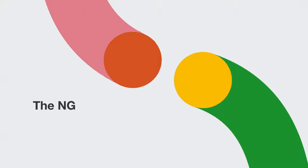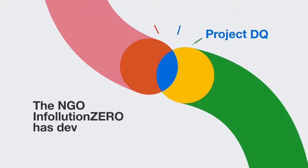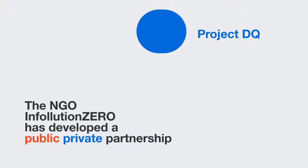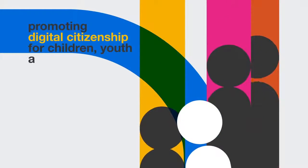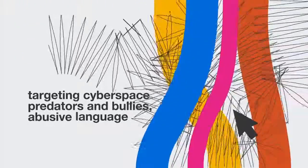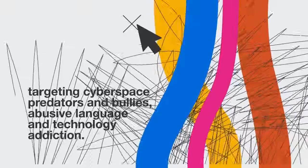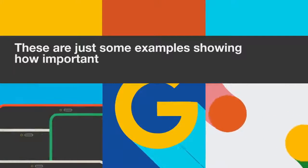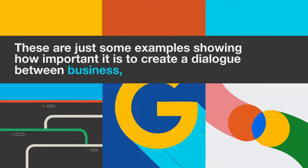The NGO Infolution Zero has developed a public-private partnership promoting digital citizenship for children, youth, and parents, targeting cyberspace predators and bullies, abusive language, and technology addiction. These are just some examples showing how important it is to create a dialogue between business, government, and end-users.